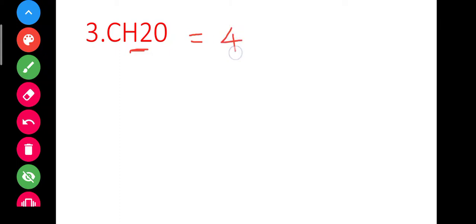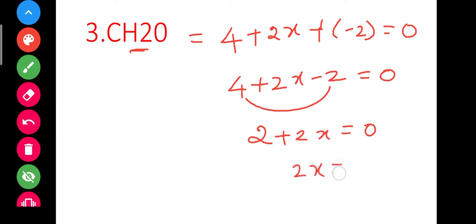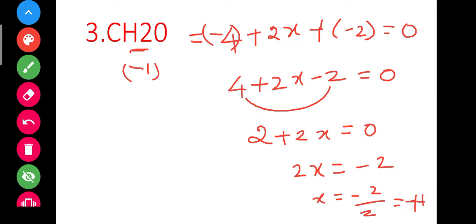Next: C2H2O. Let carbon be x. So 2x plus 2 into plus 1 plus 1 into minus 2 equals 0, giving 2x plus 2 minus 2 equals 0, so 2x equals 0 and x equals minus 1 divided... actually 2 plus 2x minus 2 equals 0, giving 2x equals 0, so x equals minus 1. The oxidation state of carbon in C2H2O is minus 1.